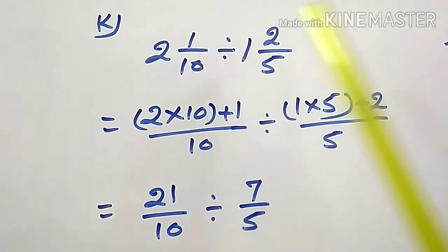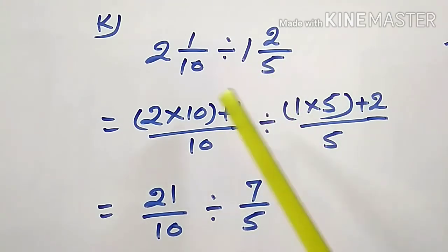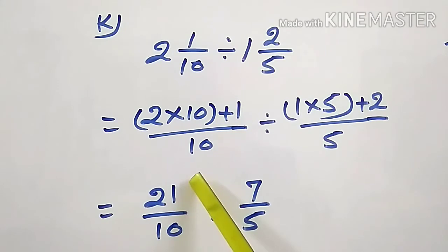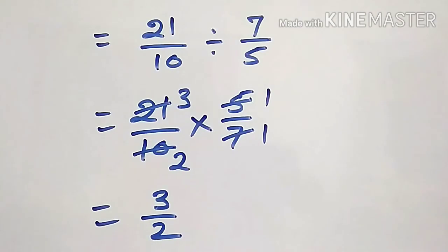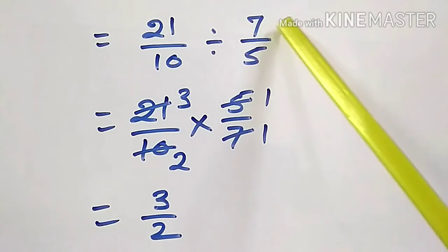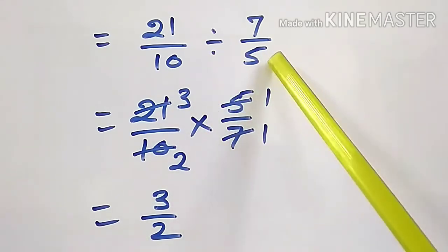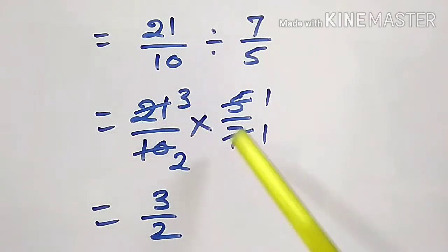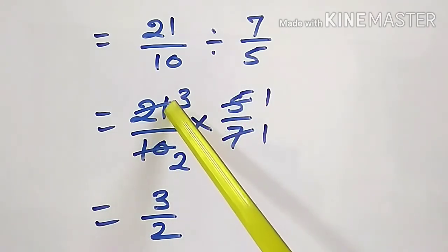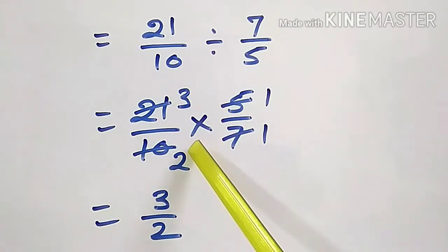Question K: 2 and 1/10 divided by 1 and 2/5. Change both mixed numbers into improper fractions. 2 into 10 is 20, plus 1 is 21/10. 1 into 5 is 5, plus 2 is 7/5. So 21/10 divided by 7/5. Write 21/10, change the sign of division into multiplication and take reciprocal of 7/5, which is 5/7. 21 is a multiple of 7 and 10 is a multiple of 5, so divide: 7 threes are 21 and 5 twos are 10. So 3/2 is the answer.